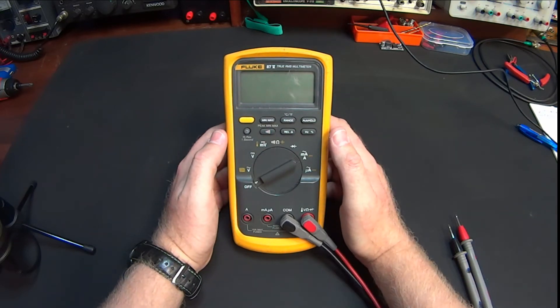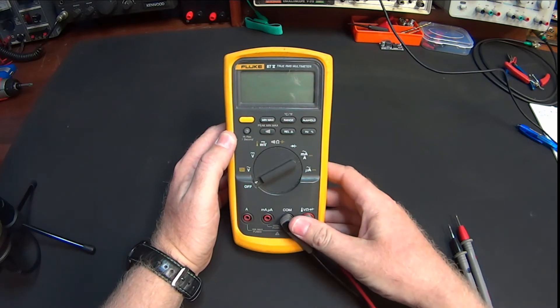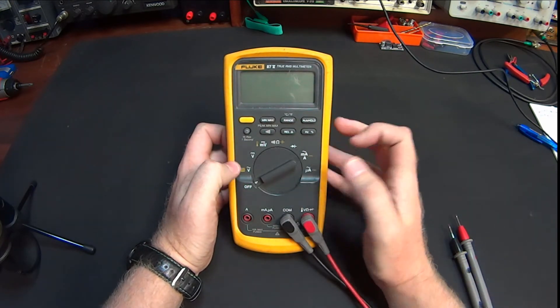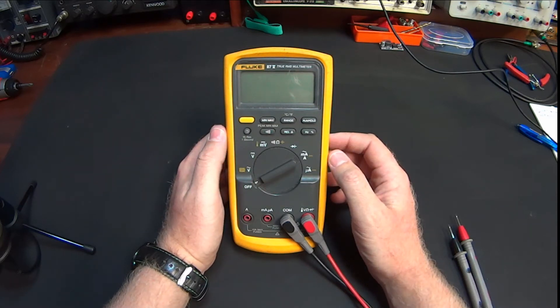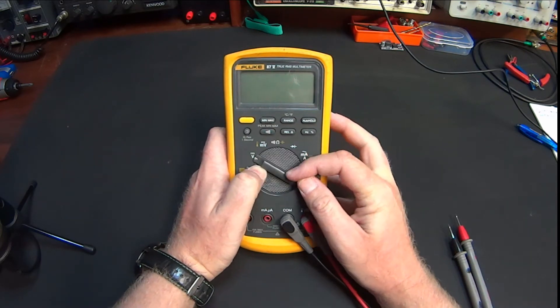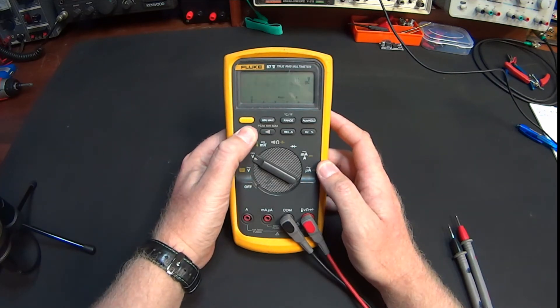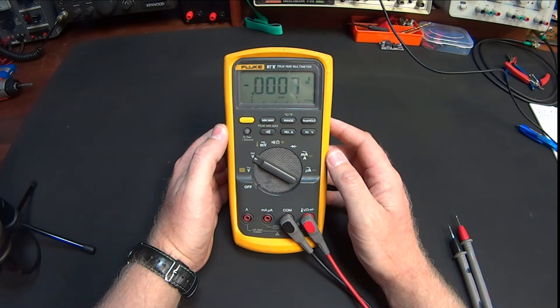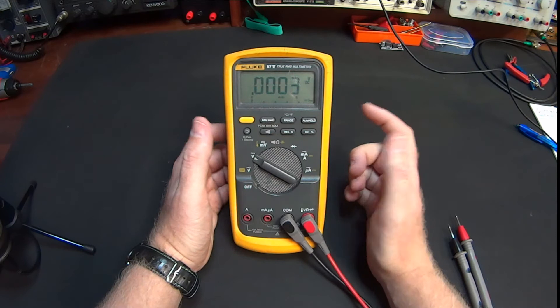Fluke 87 series 5, true RMS multimeter. Why do I love this meter so much? Well, for numerous reasons. One of them being, it does all the sort of measurements you would usually need to do. But one of my favorite features of it is when you're doing precision voltage measurements, you can go into your standard mode, and then if you push and hold this button, you go into what we call the high res mode, which will give you .0001 of a volt.